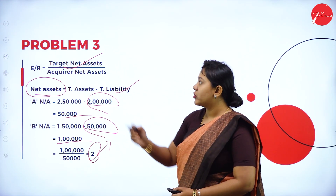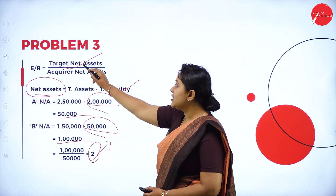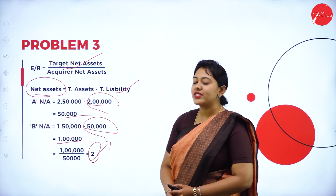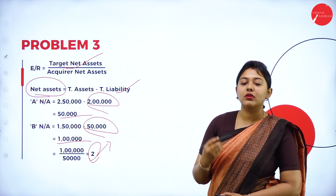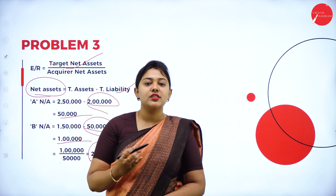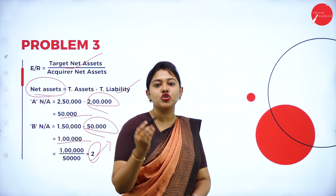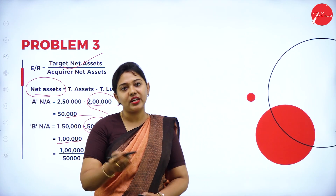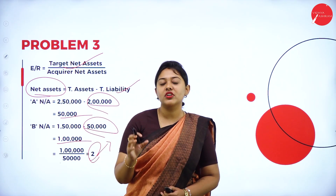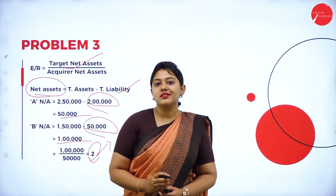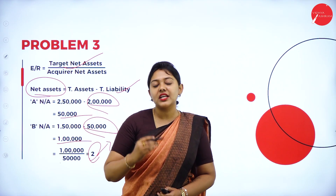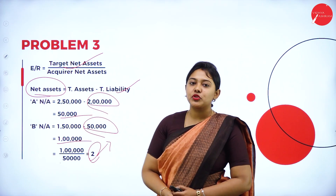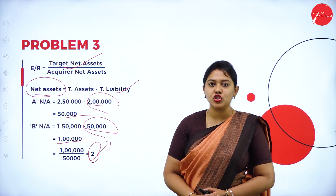The net assets of Mango Limited are 50,000 and of Apple Limited are 1,00,000. Substituting the values gives an exchange ratio of 2. Target company is Apple and acquirer is Mango. This is how you calculate the net assets method. Exchange ratio = target company net assets divided by acquirer net assets. Net assets = total assets minus total liabilities. Substituting gives the answer of 2.